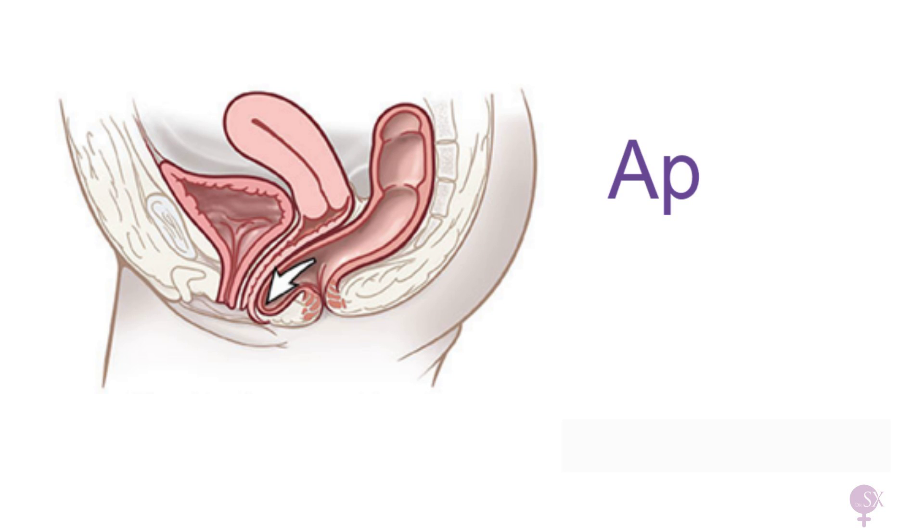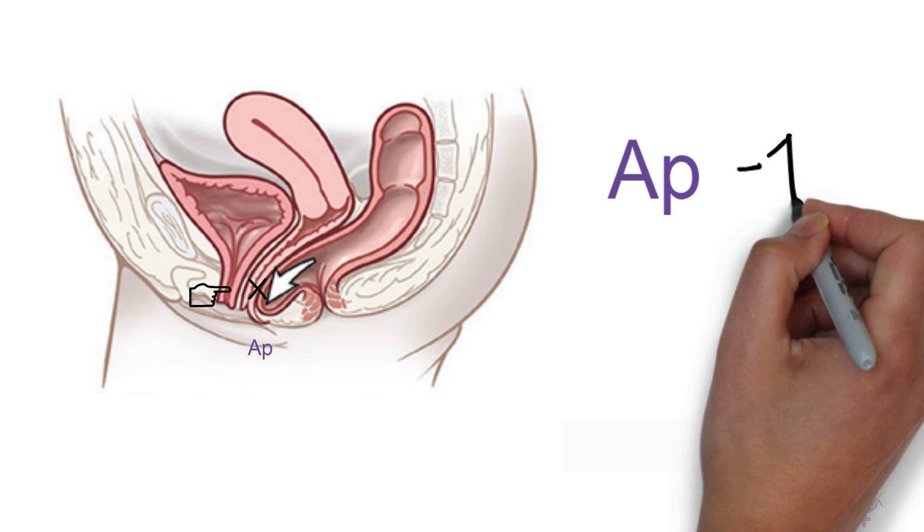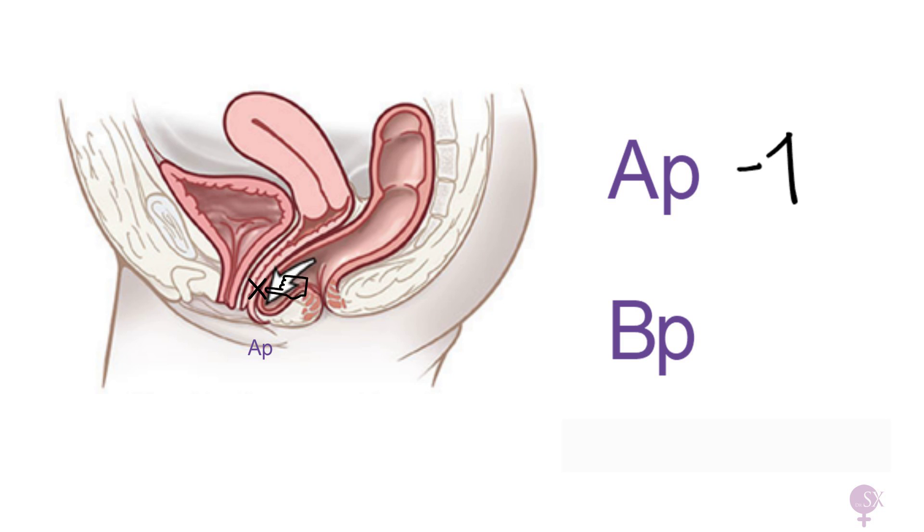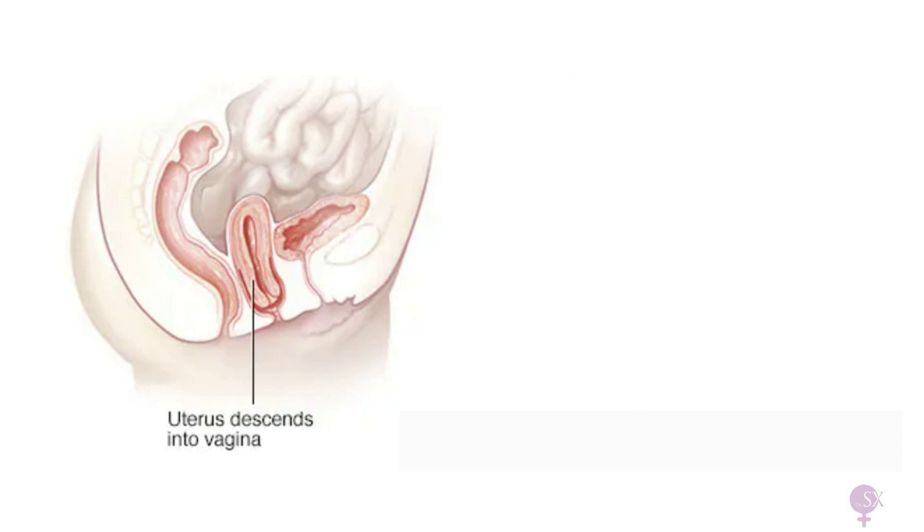Next, over here we have Ap at minus one and Bp at minus one too. This is representing a rectocele. Next, C, which is the distal point of the cervix, is at minus one, while D, the point of the posterior fornix, is at minus three, therefore representing uterine descent.